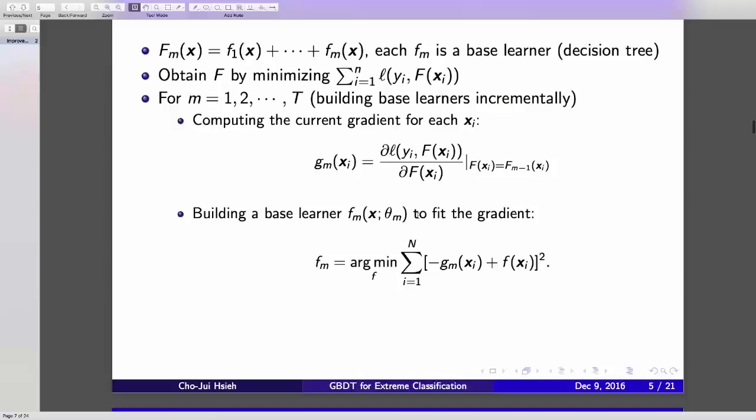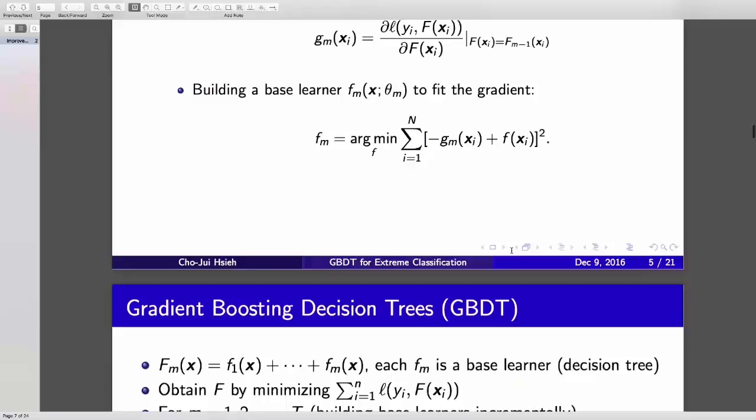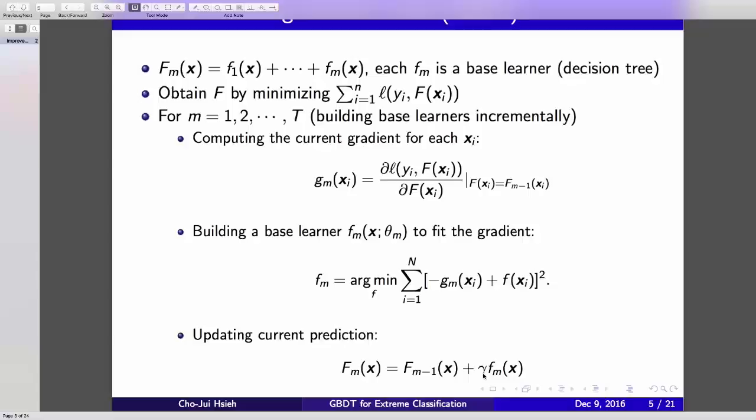This is a one variable loss function for a training data. You compute the gradient, and then you try to learn the decision tree to fit the gradient. If you have n training data, then gm is an n-dimensional vector. You try to learn the tree to fit this gradient, and then you add the tree to the current model by a step size gamma. This is the GBDT algorithm, and it's something like gradient descent. Each time you update your model by a gradient direction, but you use a tree to fit this gradient.